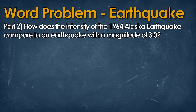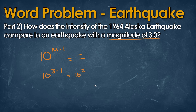Looking at part two — how does that compare to something with a magnitude of 3.1? We can use the equation where magnitude m minus 1 tells us the intensity. If the magnitude is 3, we have 3 minus 1, equal to 10 raised to the second power, which gives us 100. Compare that to 158 million with some extra — you can see that a magnitude of 3 on the Richter scale is much, much smaller than the 9.2 earthquake that hit Alaska.